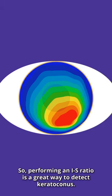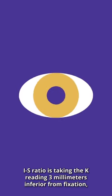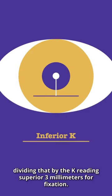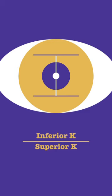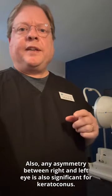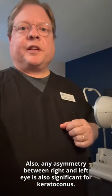Performing an IS ratio is a great way to detect keratoconus. The IS ratio is taking the K reading three millimeters inferior from fixation and dividing that by the K reading superior three millimeters from fixation. If that ratio is greater than 1.5, it is suspicious for keratoconus. Also, any asymmetry between the right and left eye is also significant for keratoconus.